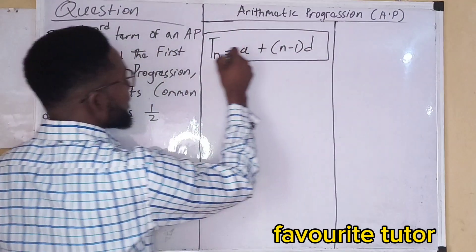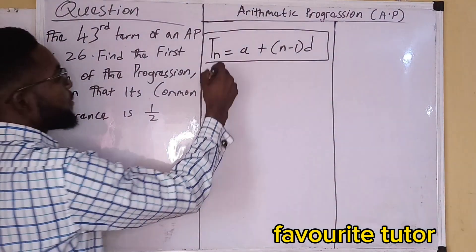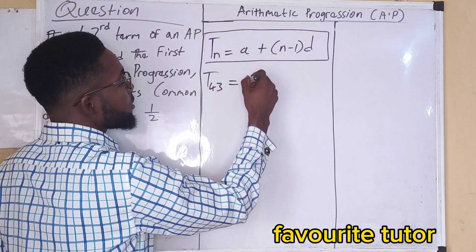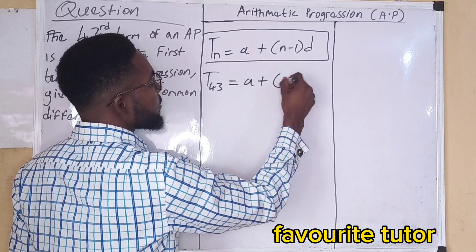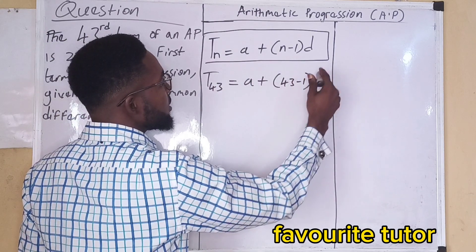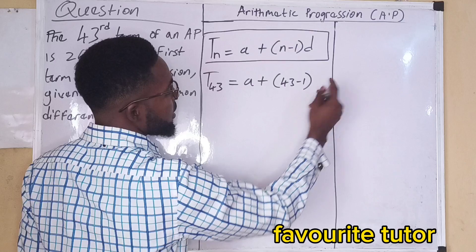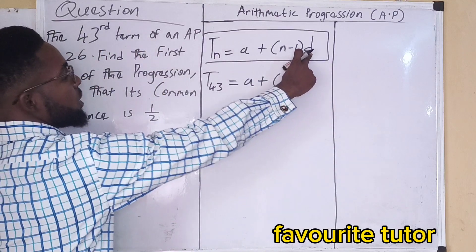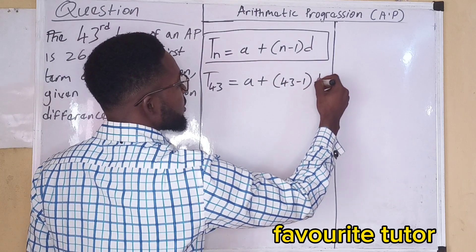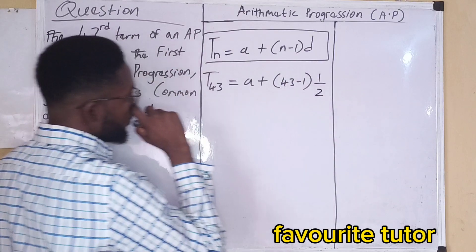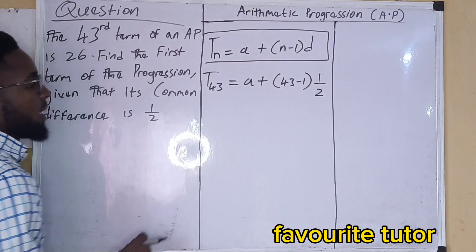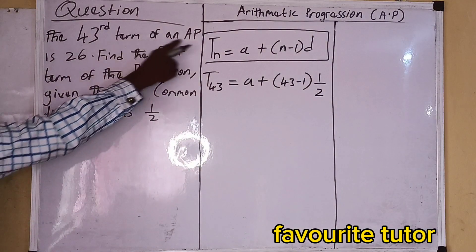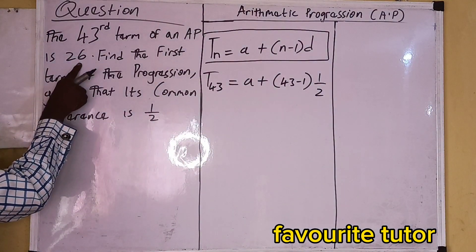The formula for the nth term of an AP: so the 43rd term will be equals to A plus 43 minus 1, then D. And D is 1 over 2, which is the common difference. From the question, they say that the 43rd term of an AP is 26.